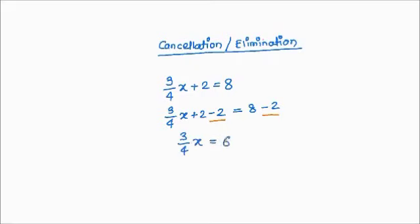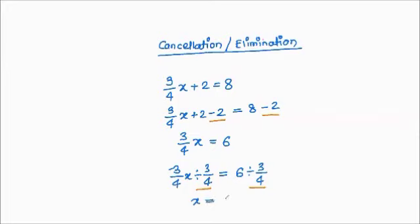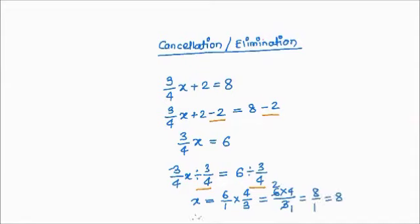Now we have (3/4)x = 6. Since 3/4 is multiplying x, we divide both sides by 3/4. Dividing by a fraction means multiplying by its reciprocal, so 6 ÷ (3/4) = 6 × (4/3) = 24/3 = 8. Therefore x = 8.